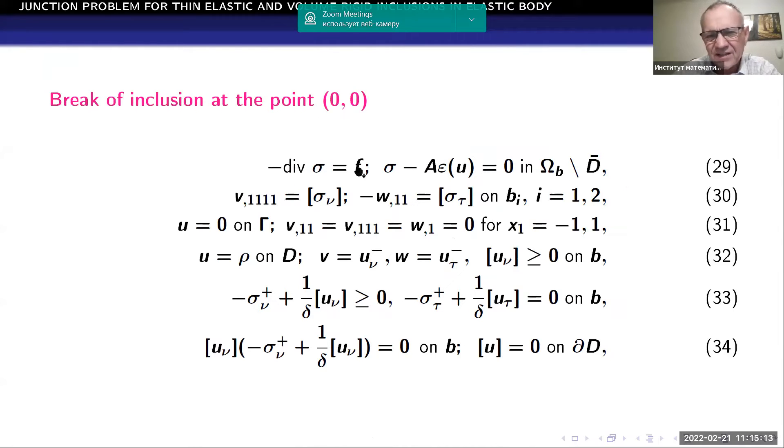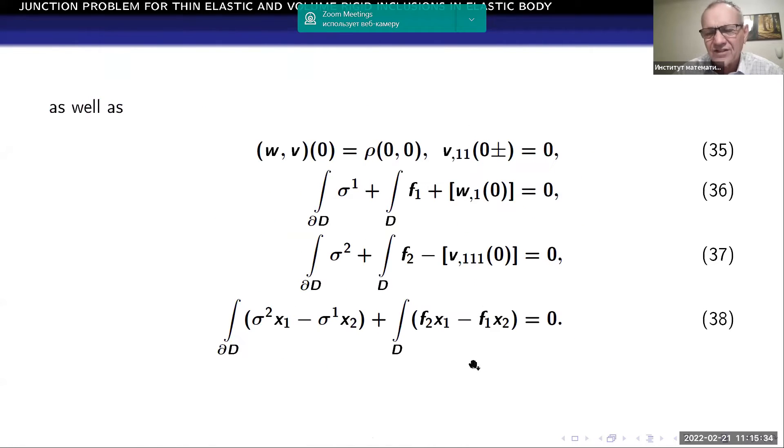But we have elasticity relations, equation for the thin inclusions, boundary conditions for elastic body and for thin inclusions. U is equal to rho from the space on infinitesimal rigid displacement on D. Glue conditions, inequality type boundary conditions, as well as junction conditions.